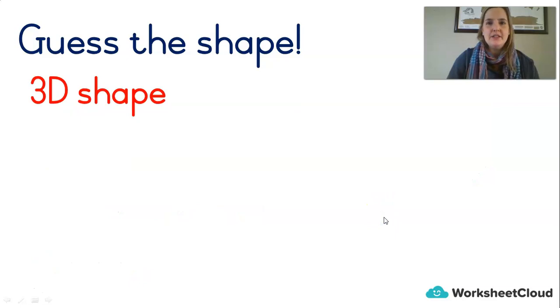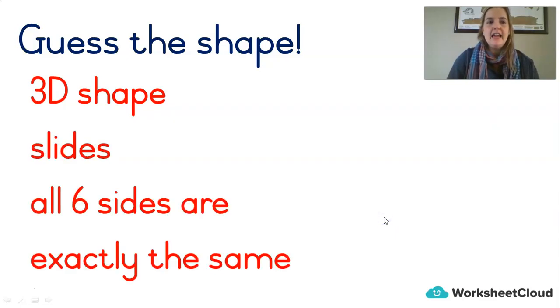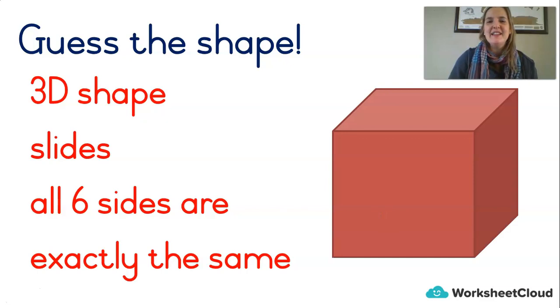Let's try another one. This one's a 3D shape. It slides and all six sides are exactly the same. It's a cube. Very good. We knew as soon as they said the sides are the same, we knew it was a cube. You can also call it a prism or a box shape is fine. The fancy name is cube.